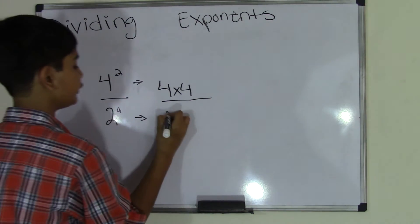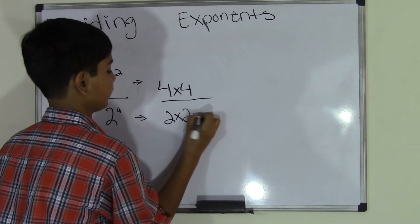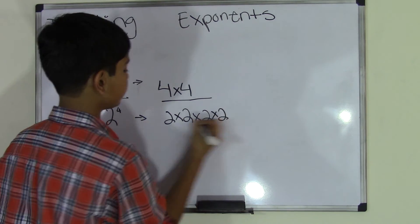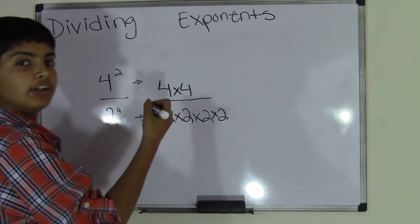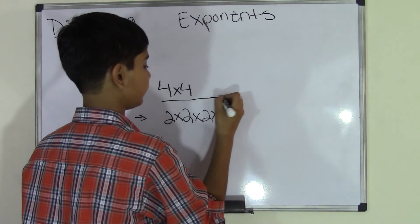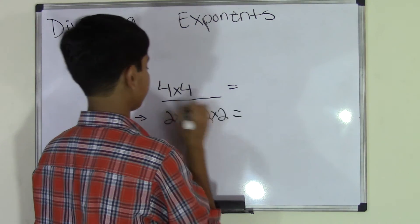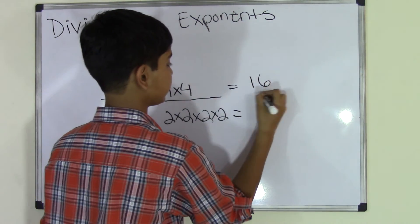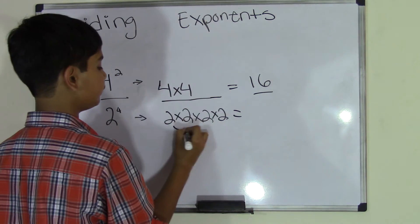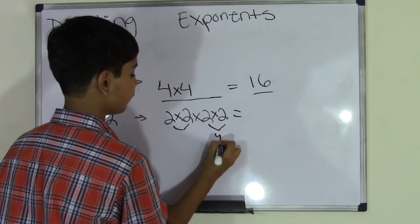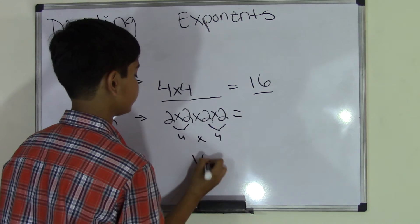Same thing over here, 2 times 2 times 2 times 2 because 2 to the power of 4 is 2 four times. And we get our products, 4 times 4 is 16 and 2 times 2 is 4, 2 times 2 is 4, 4 times 4 is 16.